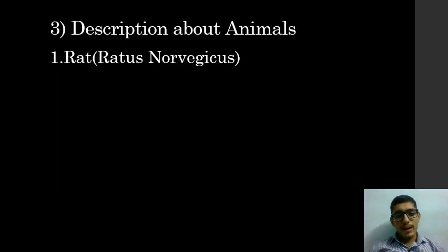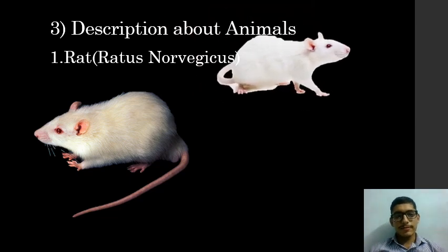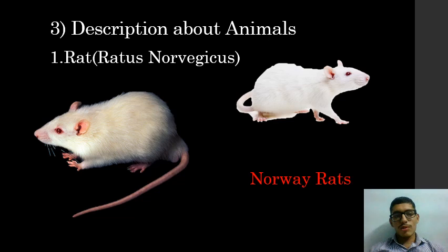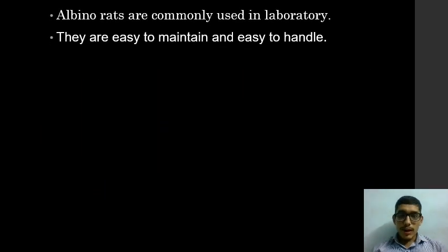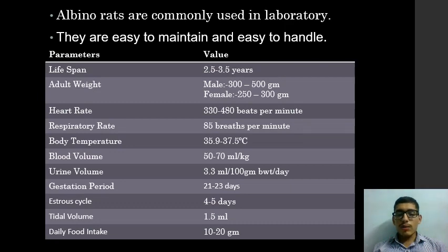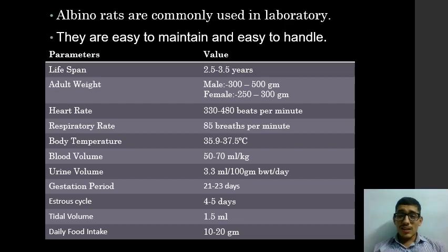Our first animal is rat. Its biological name is Rattus norvegicus. These rats are commonly known as Norway rats. Albino rats are commonly used in the laboratory as they are easy to maintain and handle. The lifespan of rats is 2.5 to 3.5 years. The average adult weight of males is 300 to 500 grams, and that of females is 250 to 300 grams. The heart rate is 300 to 480 beats per minute and the respiratory rate is 85 breaths per minute. The body temperature is 35.9 to 37.5 degrees Celsius, which is nearly equal to room temperature.